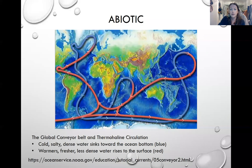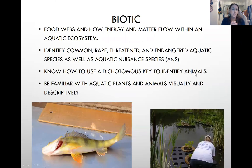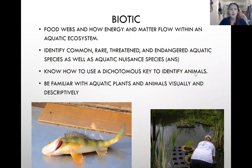Here's a graphic of the global conveyor belt — cold, salty, dense water sinks toward the bottom (shown in blue), and warmer, fresher, less dense water rises to the surface (shown in red). That's a good generalization of what you'd want to focus on for the abiotic section. If you go through those slides and understand those concepts, you should be good to go. All the concepts are backed with resources on the webpage, which I'll go over further later.